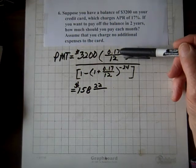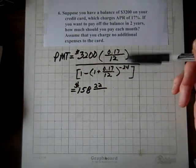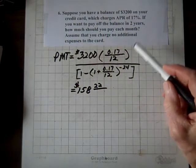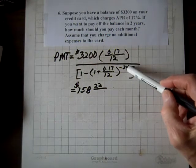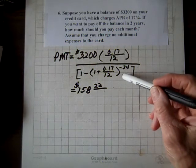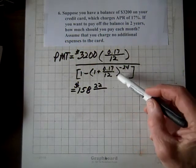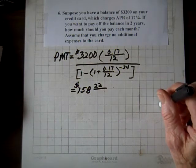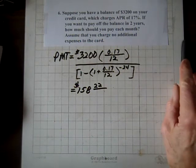APR is 0.17, N is 12, and 2 times 12, because Y is 2, 2 times 12 is 24, that exponent's going to have a negative sign on it. And when you compute, you get payments of $158.22.